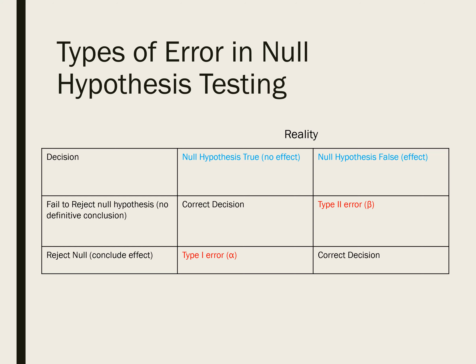In this video we're going to discuss types of error in null hypothesis significance testing. Assuming we're using a dichotomous decision rule, we would either reject the null hypothesis and claim there is an effect — a statistically significant difference between means or relationship between variables — or we would fail to reject the null hypothesis and say we don't have strong evidence to suggest a relationship or difference. Either way, it's possible that we can make a correct or an incorrect decision.